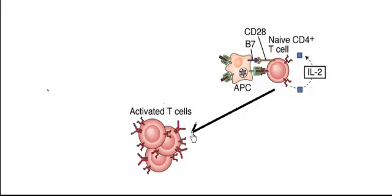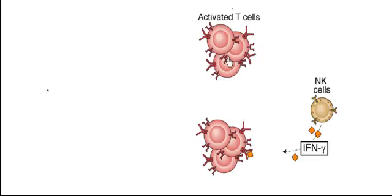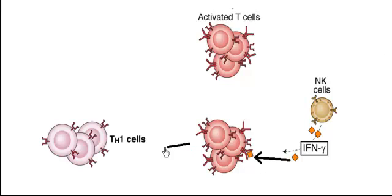You're going to see T cells will just keep dividing and proliferating and expressing some receptors. Now in those activated T cells, if a natural killer cell produces a cytokine called interferon gamma, this interferon gamma will go and bind to the receptor on the surface of the activated T cell and convert those T cells into T helper 1 cells.